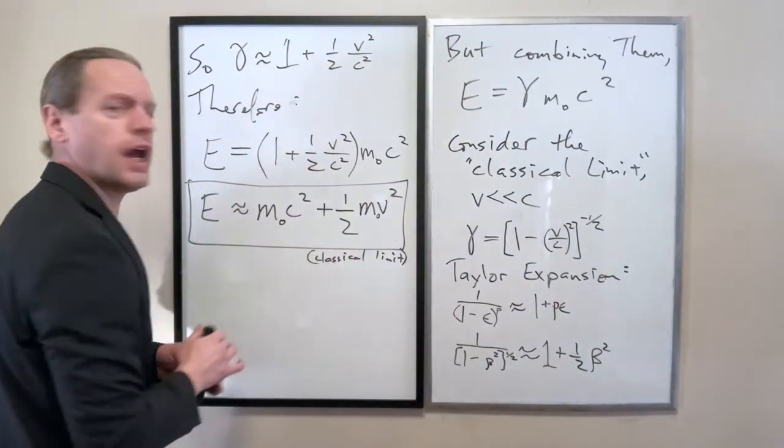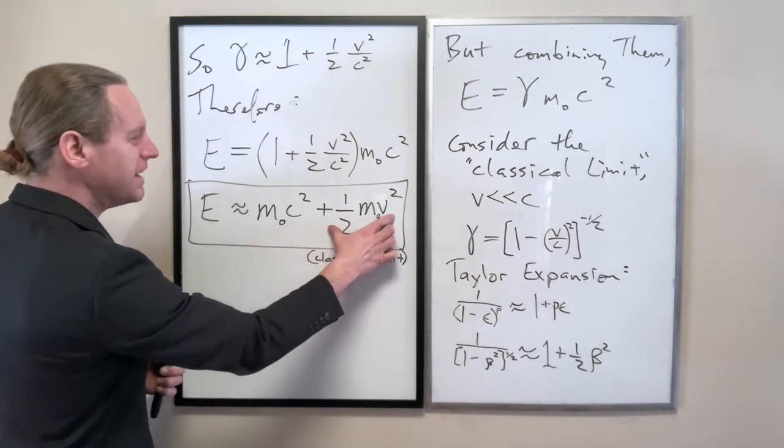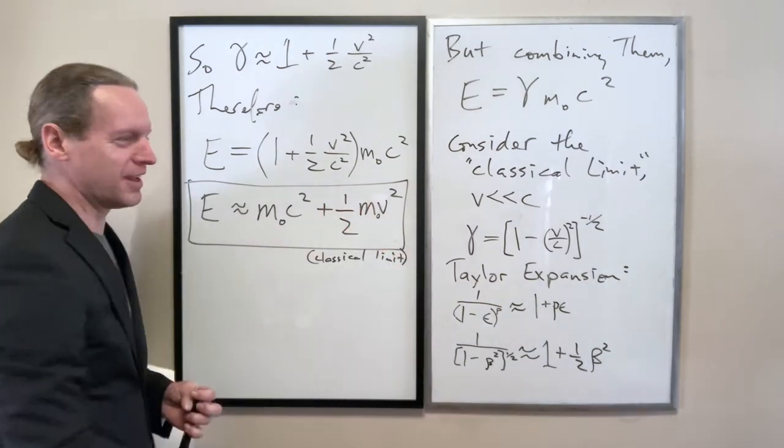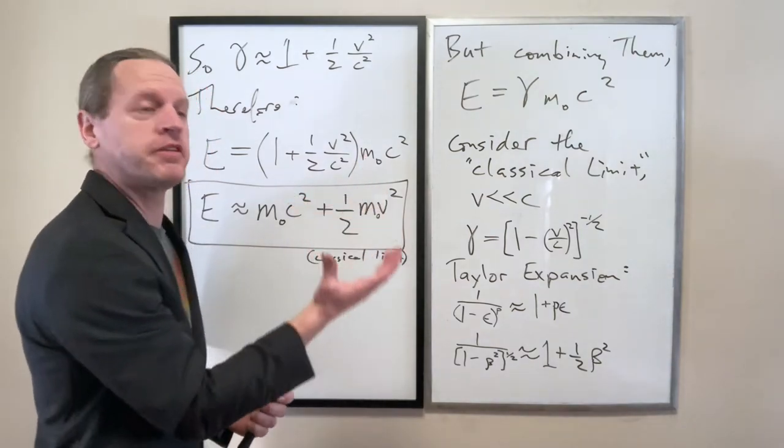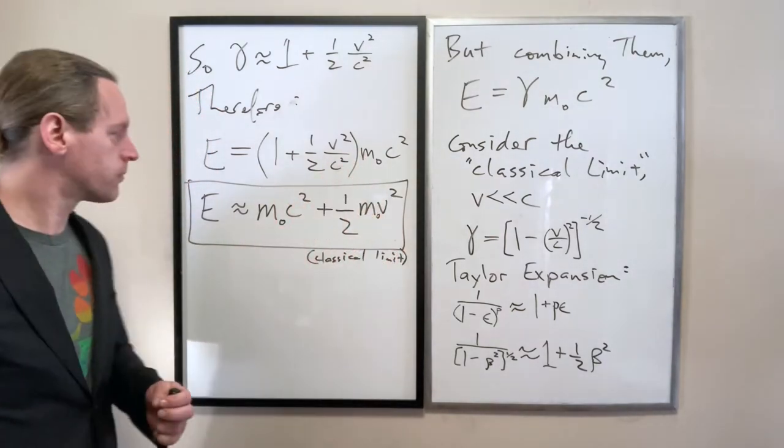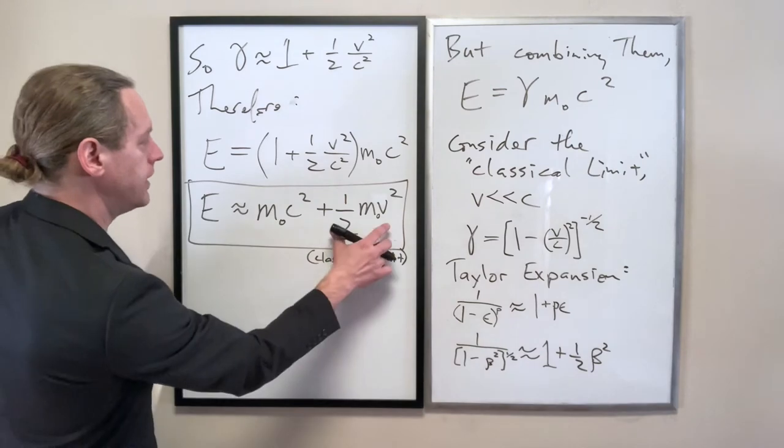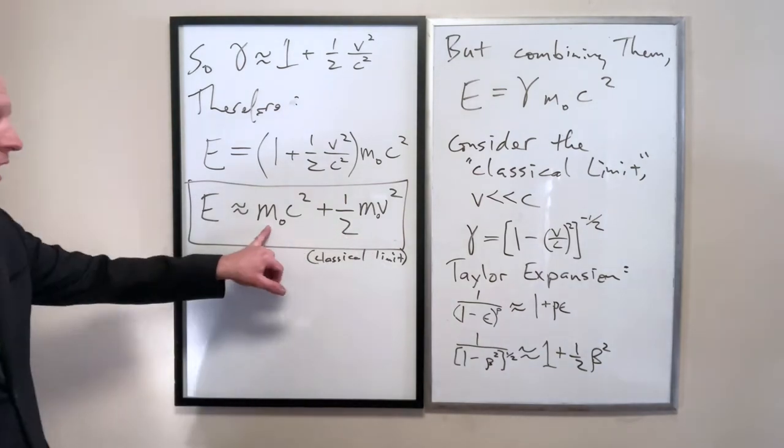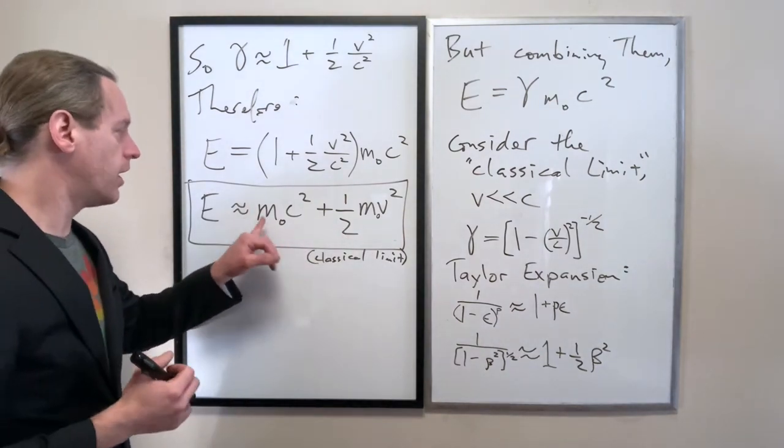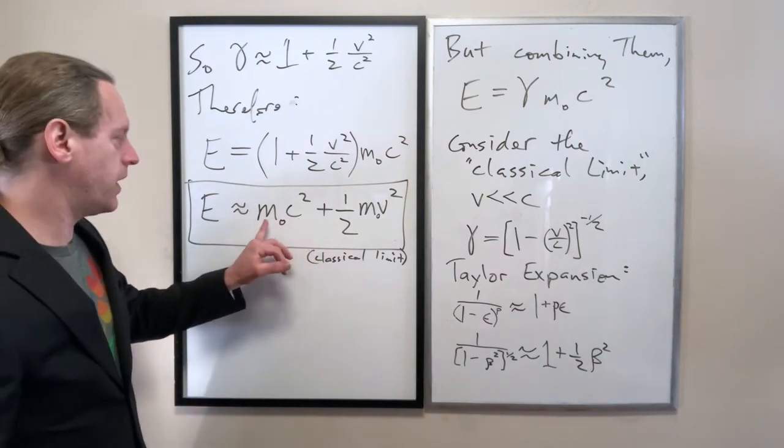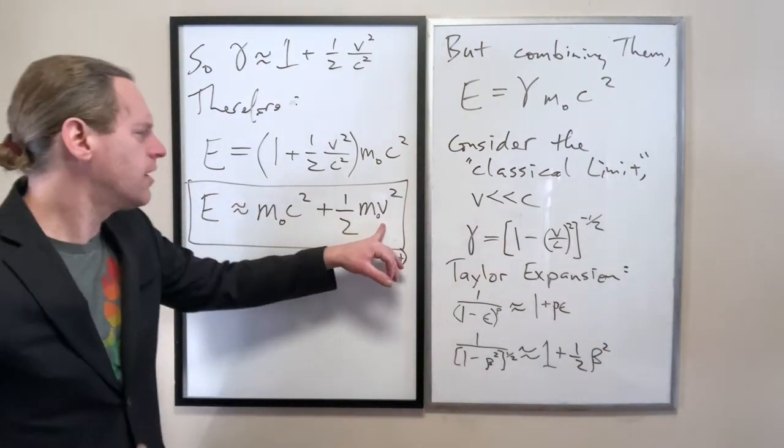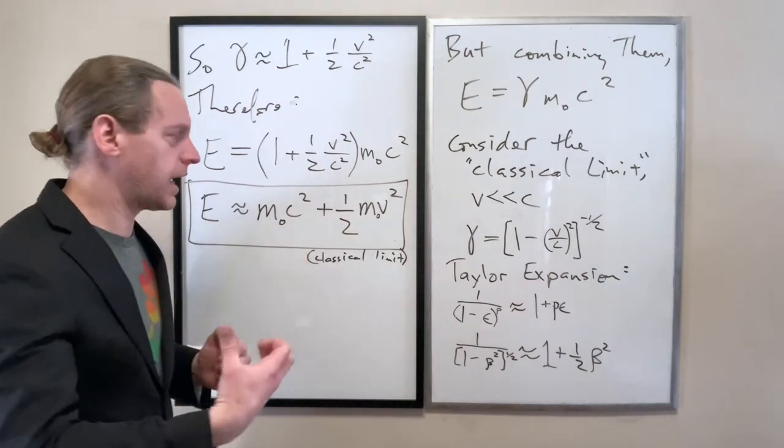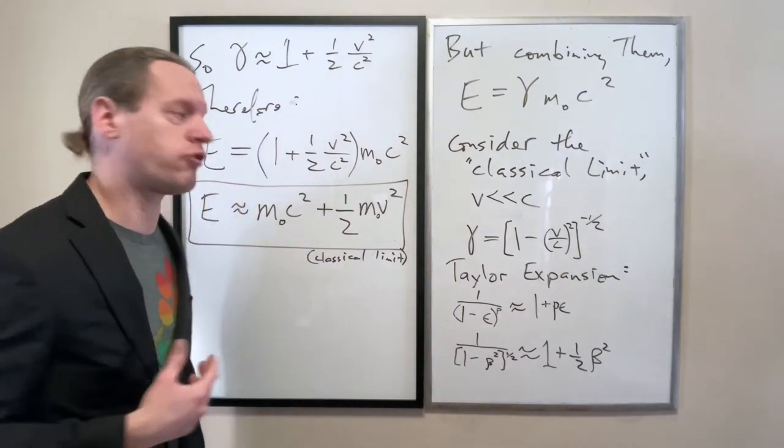And now what we can do is plug that into our relativistic energy formula then. Therefore E relativistic equals 1 plus a half V squared over C squared times that M naught C squared. And whether or not you believe in living in a world with C's, they cancel out regardless.